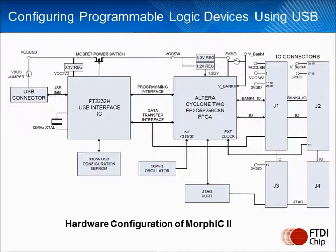Hardware reconfiguration via USB means the FPGA specified only requires enough logic gates to deal with the most complex discrete function it will need to implement. It does not require the capability to cover all potential functions. This maximises silicon utilisation so a lower cost device can be used.